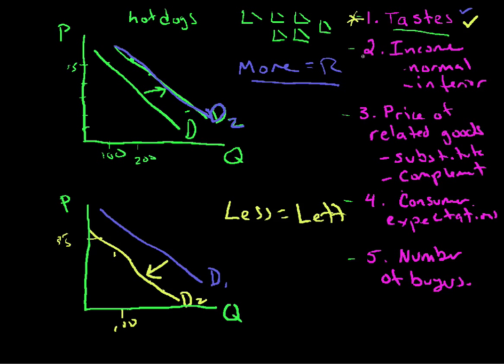We've got this whole list to work through. This is just a matter of studying. I'm sure whatever textbook you're using will list these same things. You've just got to study it. More to the right, less to the left. Figure out tastes first because that's the easiest one and it gets you comfortable and you're shifting this demand curve. Things have changed. Preferences have changed.